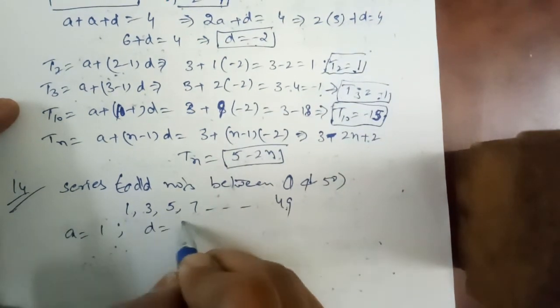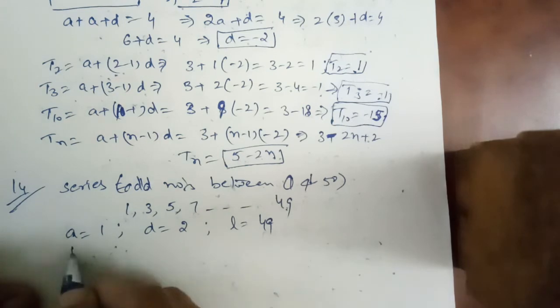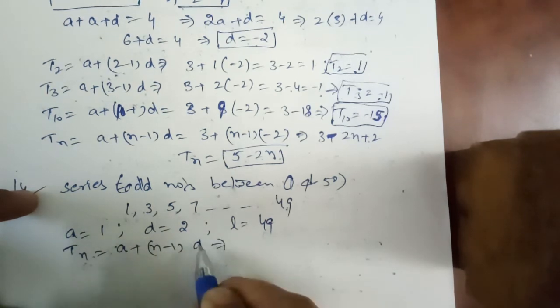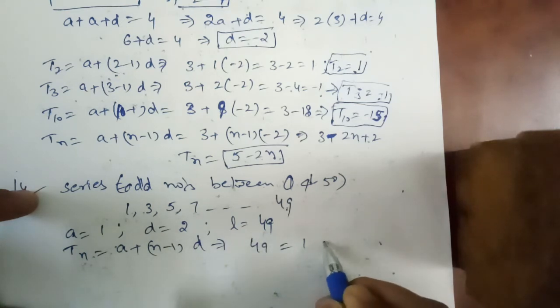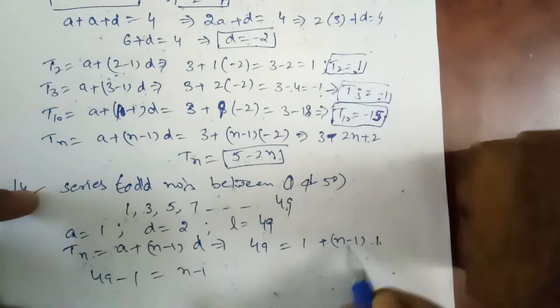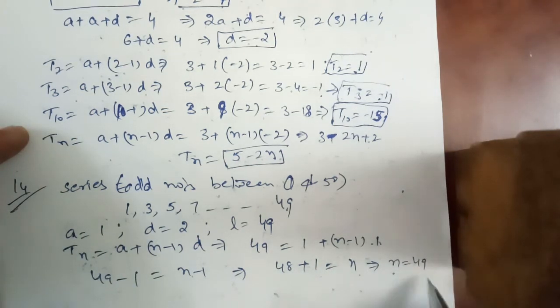So A is equal to 1, D is equal to 2, L is equal to 49. We have to find sum of odd numbers. We need to find how many terms. So first we find n from nth term. Tn is A plus n minus 1 into D. Tn is 49, 1 plus n minus 1 into 2. 49 minus 1, 48 plus 1, n is equal to 49.